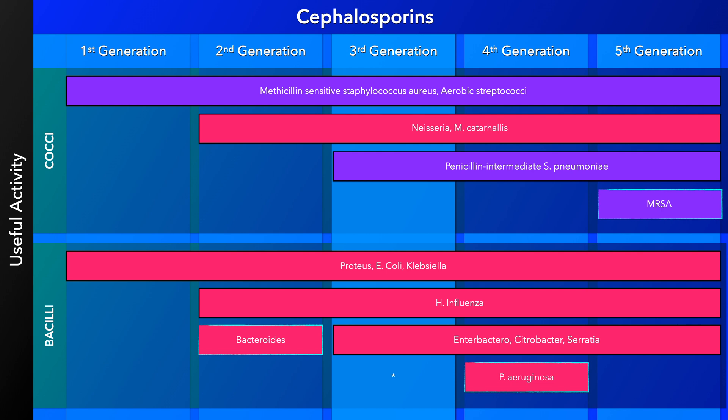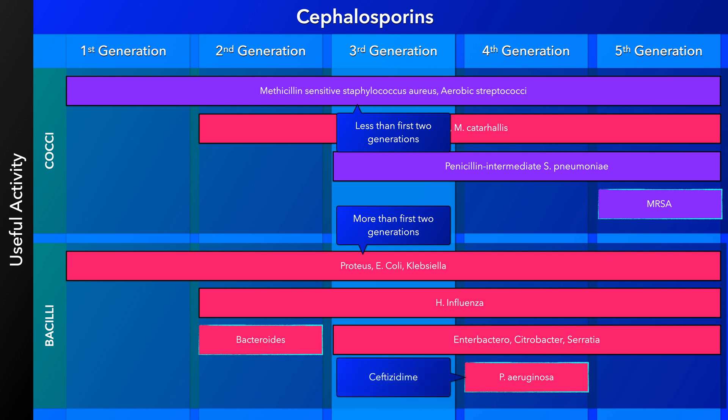Third generation cephalosporins are broad-spectrum antibiotics that can treat a wide variety of conditions. They provide better coverage against gram-negatives than the first generations, but somewhat less coverage against staphylococcal organisms. They are often effective against strains with intermediate susceptibility to penicillin and are the antibiotic of choice for treating gonorrhea. IV forms such as ceftriaxone penetrate the blood-brain barrier well and can be used in the treatment of meningitis. One agent in this generation, ceftazidime, also provides coverage against pseudomonas.